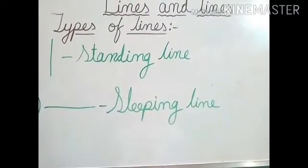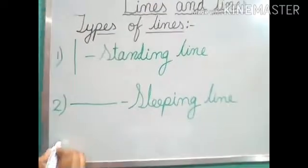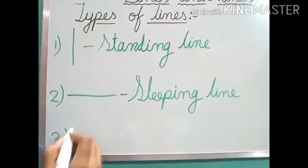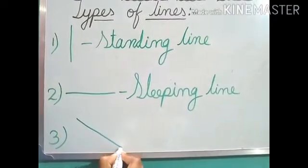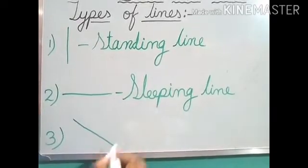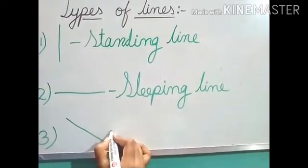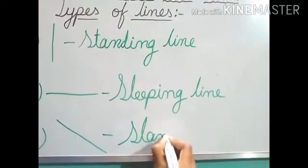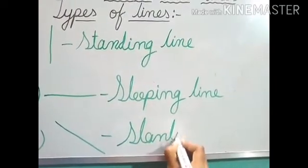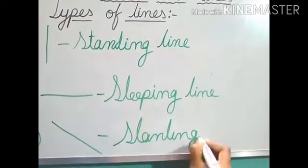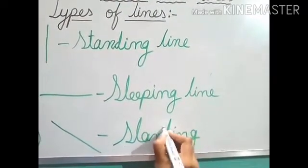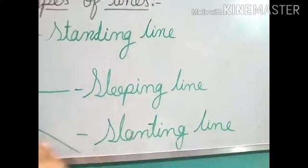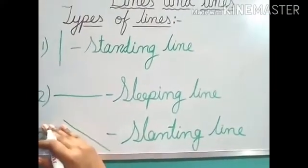Then, number three — like this. This is Slanting line. We call this one Slanting Line. That is little bit bent, like this.